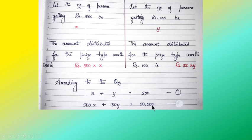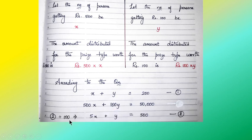Both these equations are linear equations in two variables — we have both x and y. If you notice equation 2, you can find that 100 is a common factor. So when you divide by 100, you get: 5x plus y equals 500.